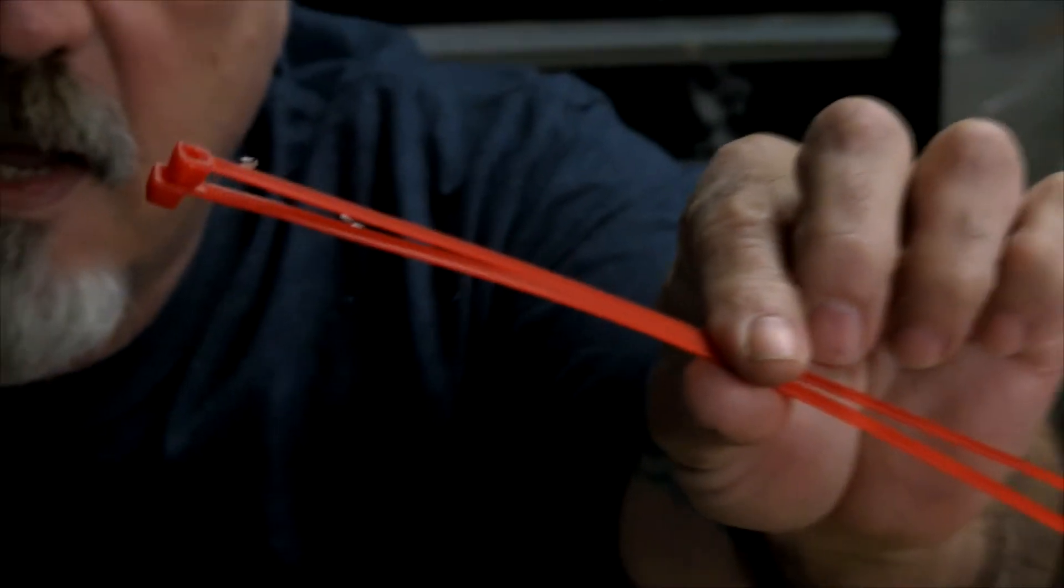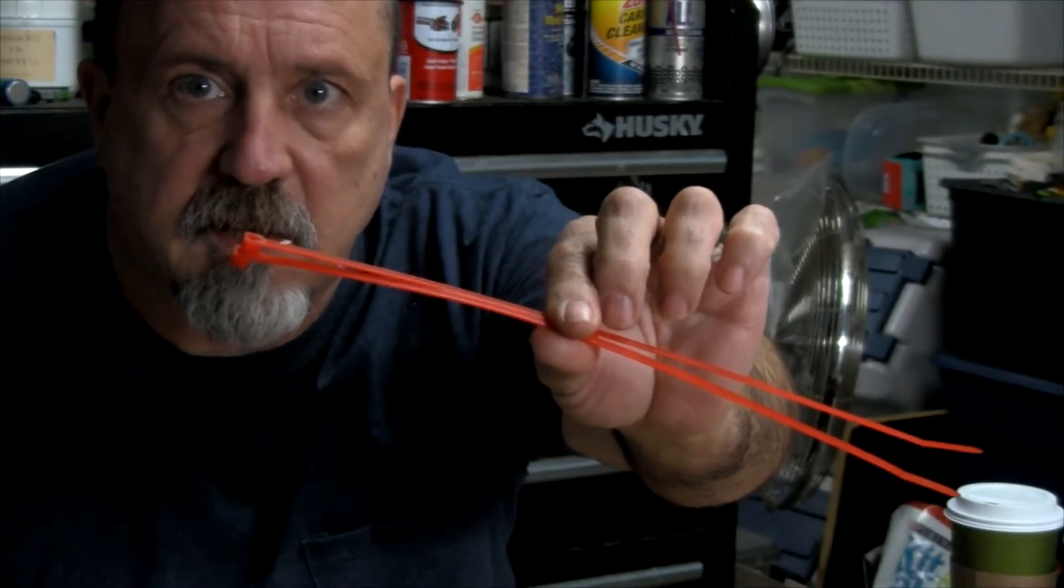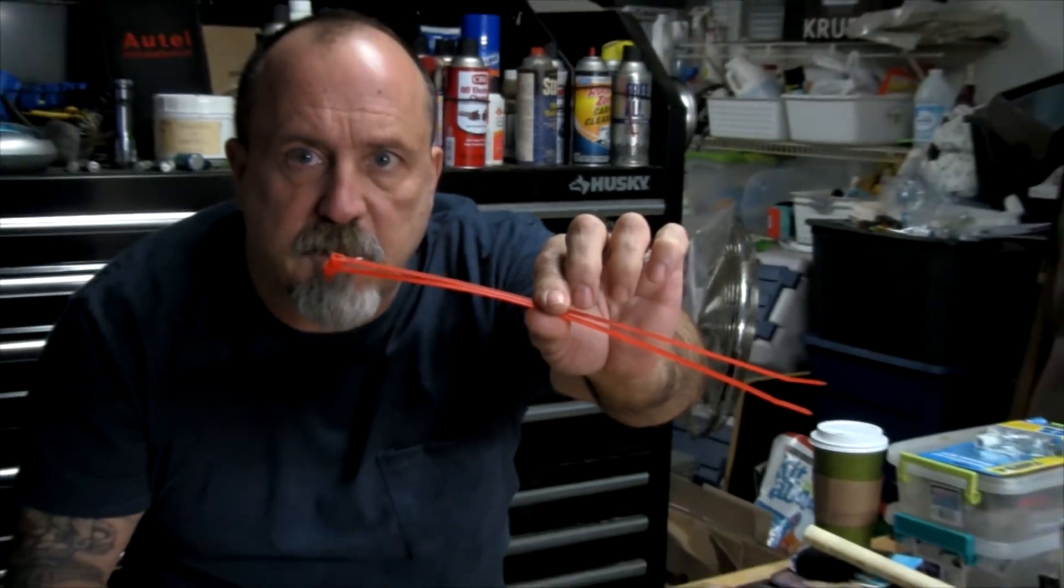And last but not least, we've got some self-stick velcro, two-sided tape, and a couple of tie wraps. Once I get this all together you'll see how I'm gonna use this all.